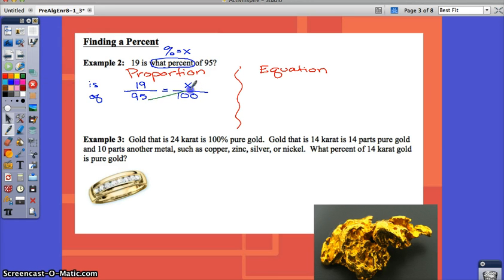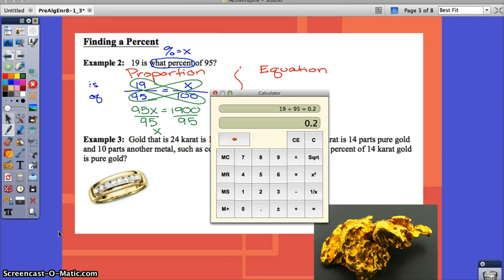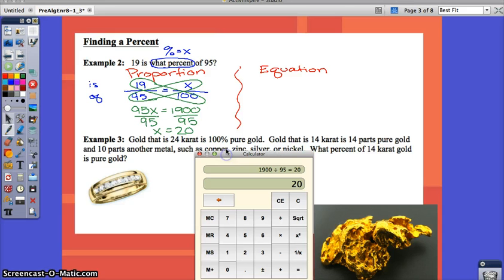Remember, we learned how to solve a proportion. When we have two equal fractions, we can cross multiply. So, we have 95 times x is equal to 19 times 100. 100 is an easy number to multiply by. And then we divide by 95 to isolate our variable. With the proportion method, we would get 20. You must remember what you're solving for. We were asked to find the percent, so don't forget to put the percent symbol on your answer. You must write that in.